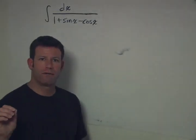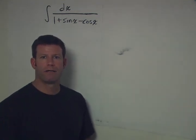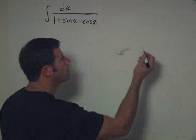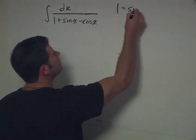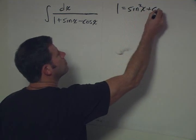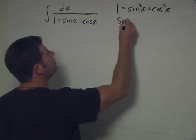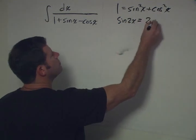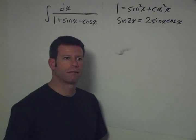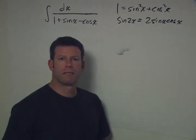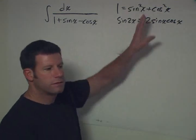Anytime you're given trigonometric functions, remember there are a couple of identities that might be your get out of jail free card. The two that are most often used: one is sine squared x plus cosine squared x equals 1, and the other is that sine 2x equals 2 sine x cosine x. There's also cosine 2x equals cosine squared minus sine squared, though that's used a bit less often.